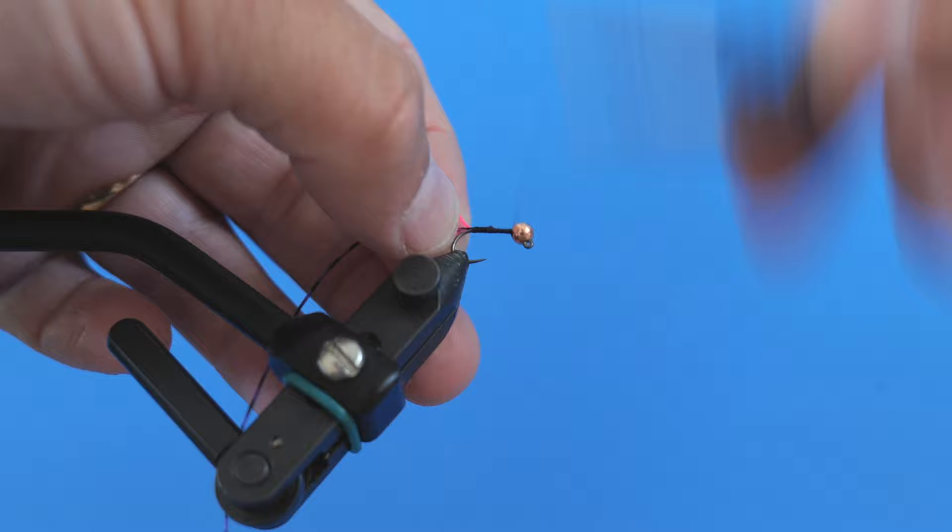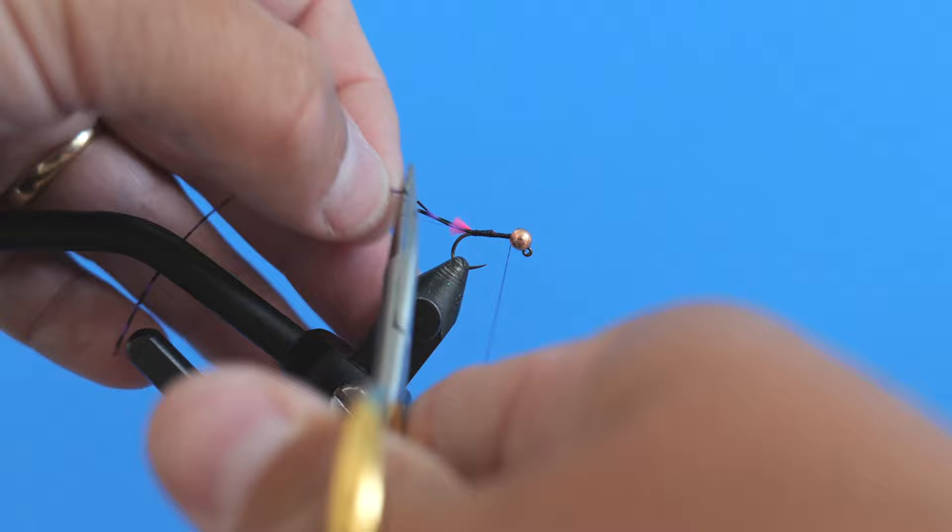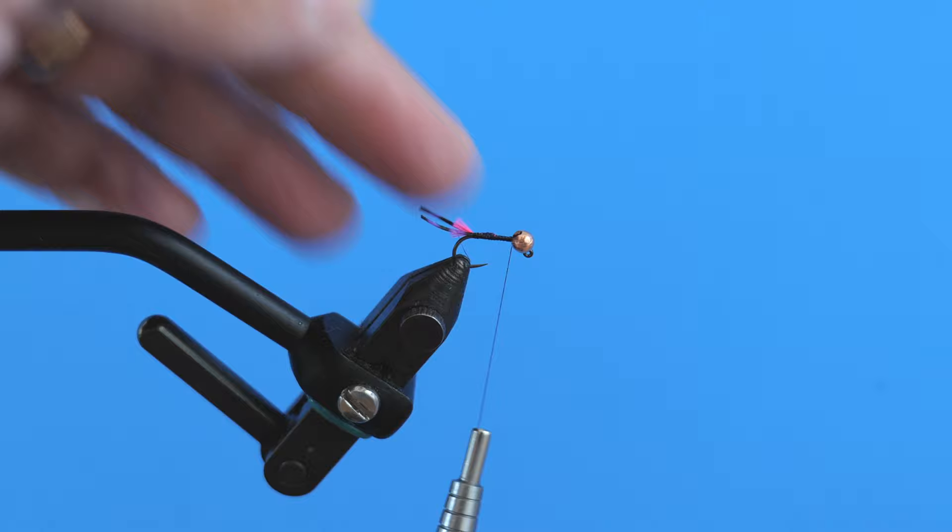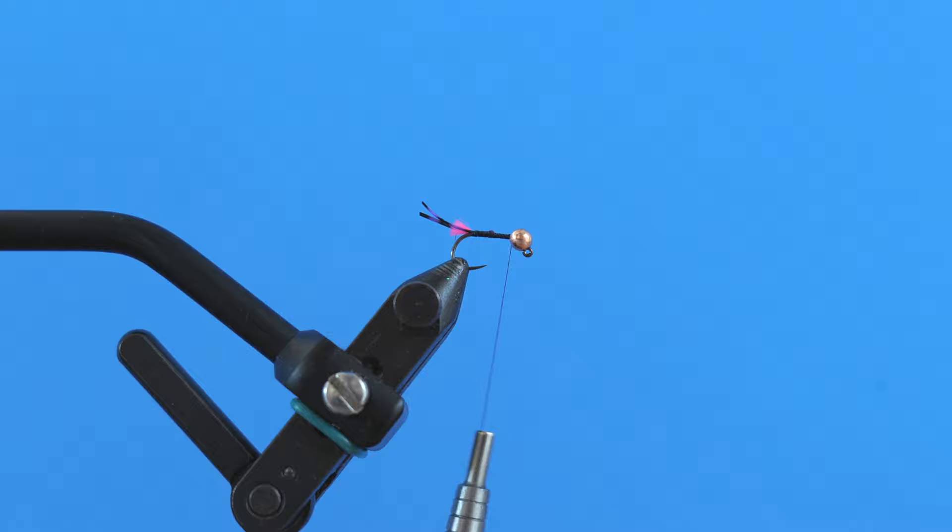So I'm going to do touching turns all the way like that and lock that in, come back to the eye of the hook. And then I'm just going to trim this to match the other legs. Now we kind of have this nice split tail. Just like that.